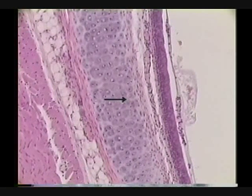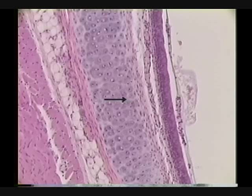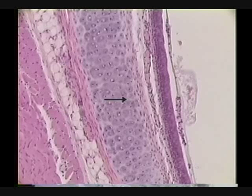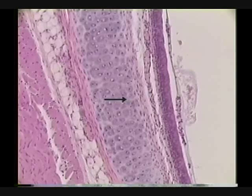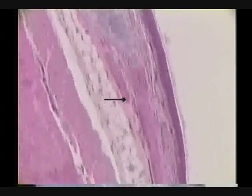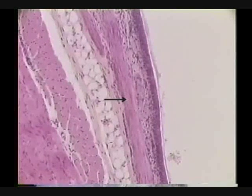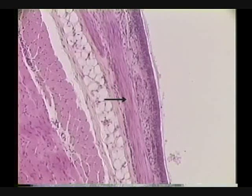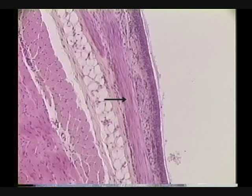Identify the structure occupied by the arrow. The structure is a cartilage ring, or a tracheal ring. Identify the structure indicated by the arrow. The structure is the trachealis muscle.